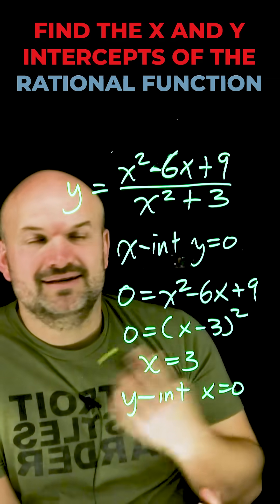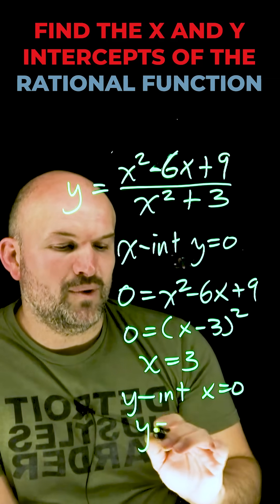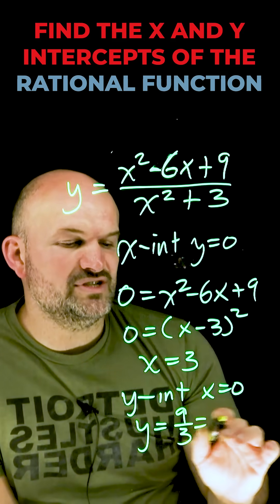So if you want to find the y-intercept, just simply make sure you take constant over constant, so therefore y equals 9 over 3, which is equal to 3.